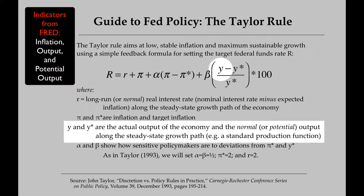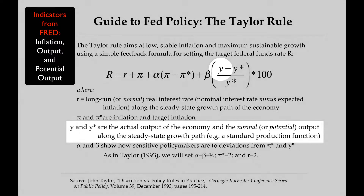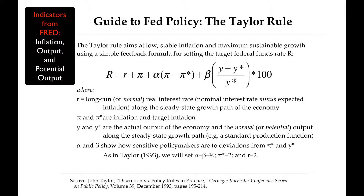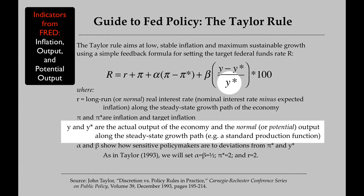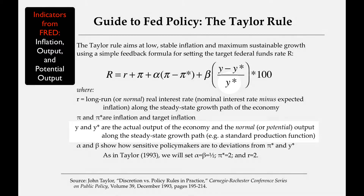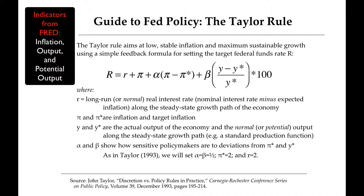Y is the measure of real GDP, also found in FRED. And Y star is a measure of normal or potential output. We'll use the CBO's estimate, which is found in FRED.